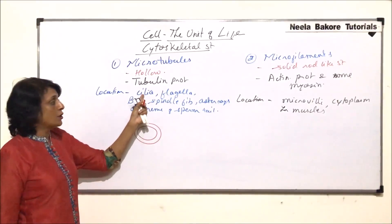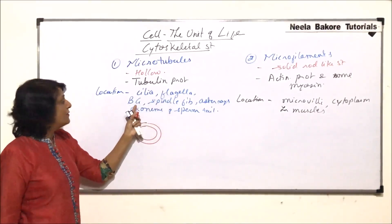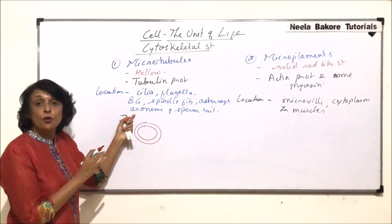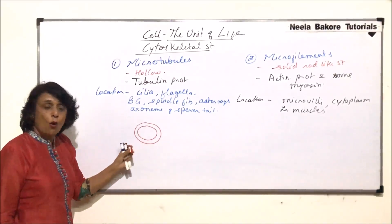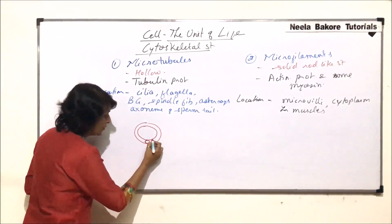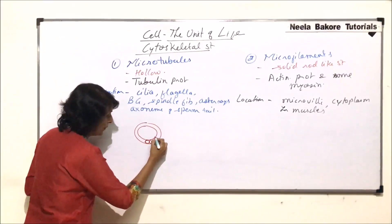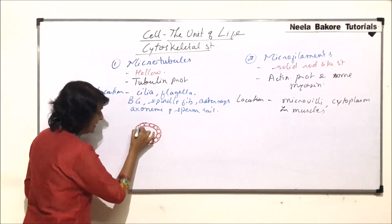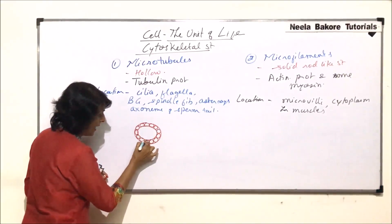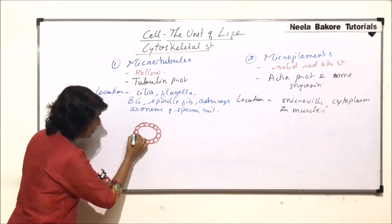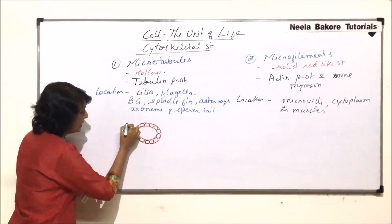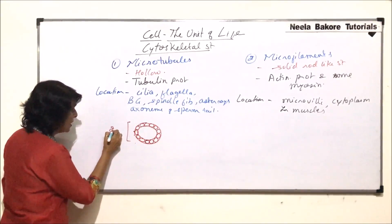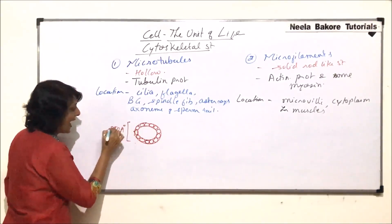This wall is made up of 13 protofilaments — we discussed this when talking about the structure of cilia, flagella, basal granules, and centrioles. Here the wall has 13 protofilaments: one, two, three, four, five, six, seven, eight, nine, ten, eleven, twelve, and thirteen.